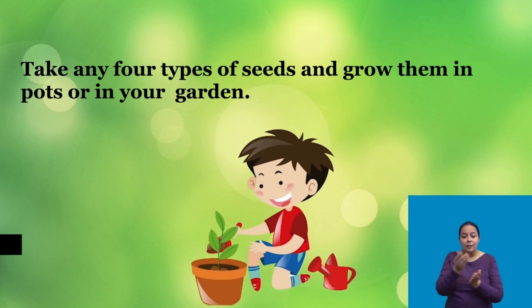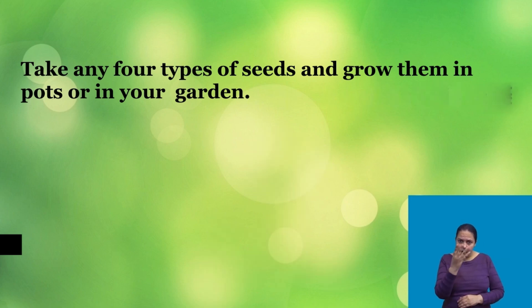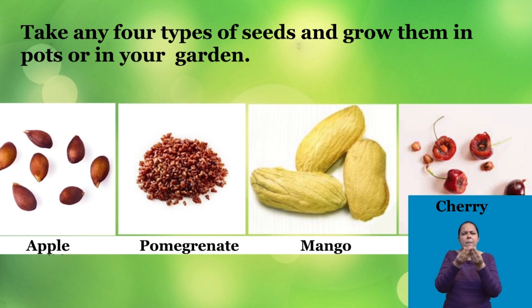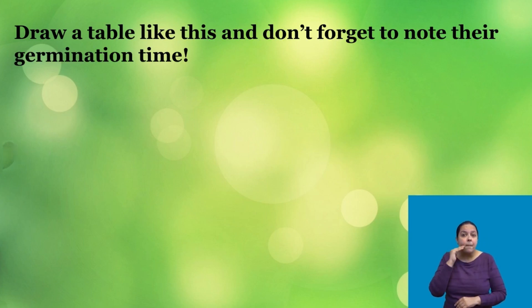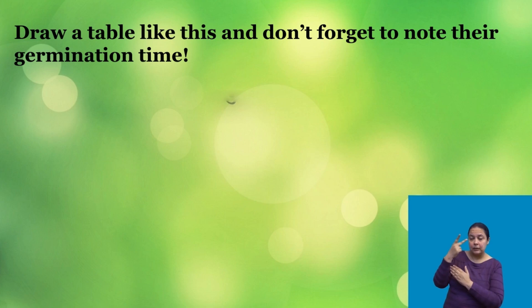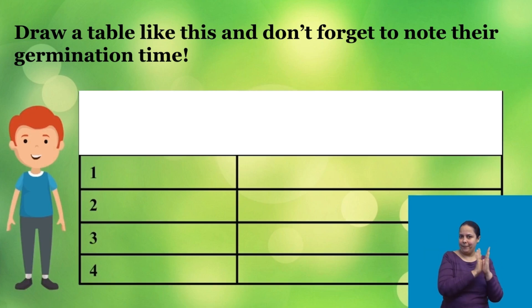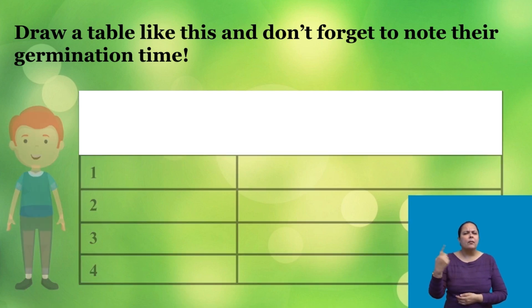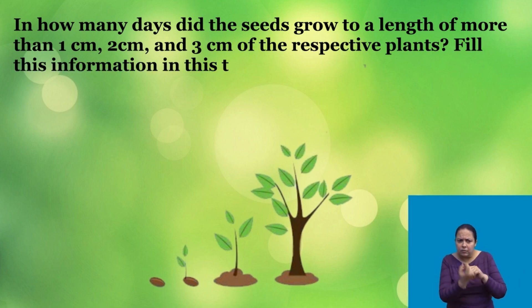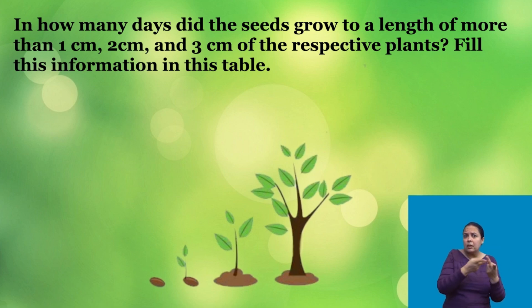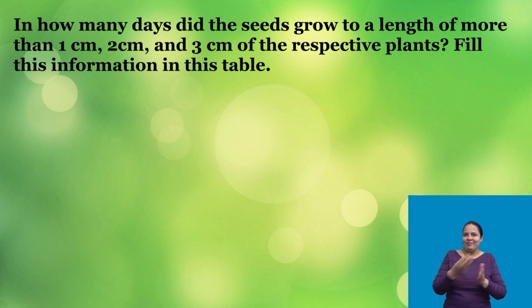Now, it's your turn to grow plants. Take any 4 types of seeds and grow them in pots or in your garden. Draw a table like this and don't forget to note their germination time. In how many days did the seeds grow to a length of more than 1 cm, 2 cm and 3 cm of the respective plants? Fill this information in this table.